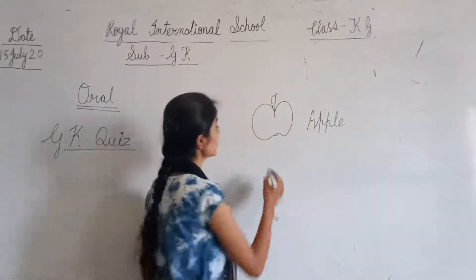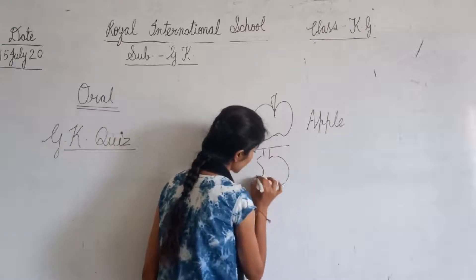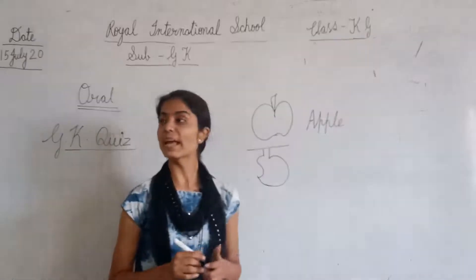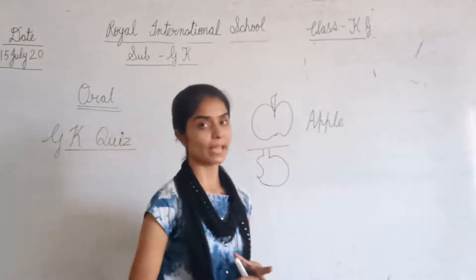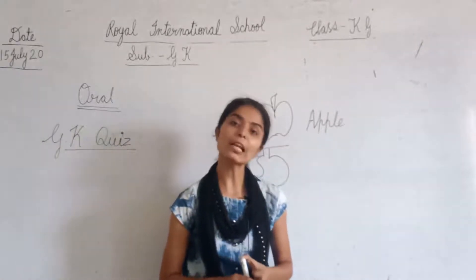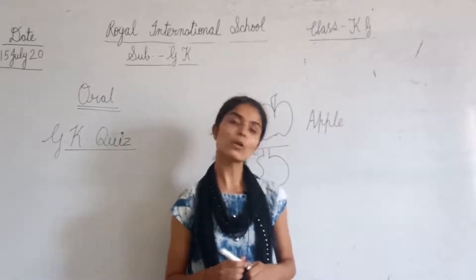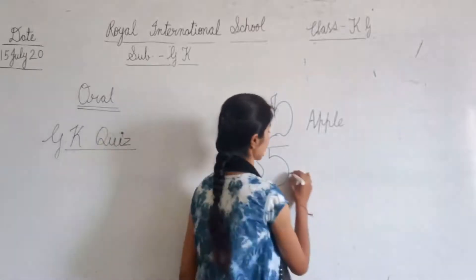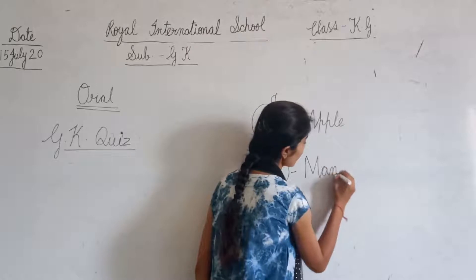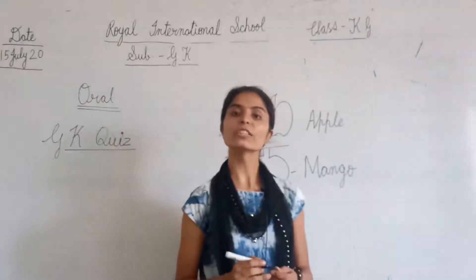Next picture is mango. What is this? Mango. Color of mango? Yellow. M-A-N-G-O. Mango. Color of mango? Yellow.